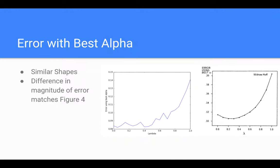Figure 5 is the average error at the best alpha value on the random walk problem. As you can see, they're similar shapes. The main difference is the difference in magnitude, and we believe that's the same reason as in figure 4 — that the training sets used in the Sutton paper were more difficult for the TD lambda problem. Thank you.